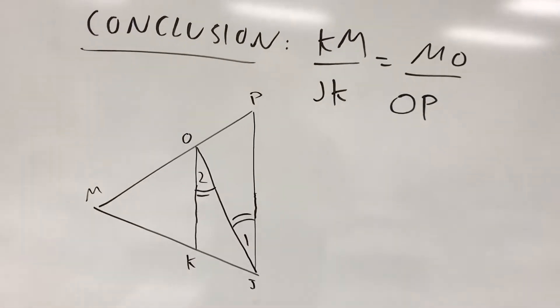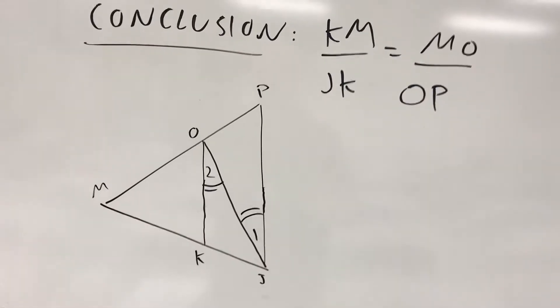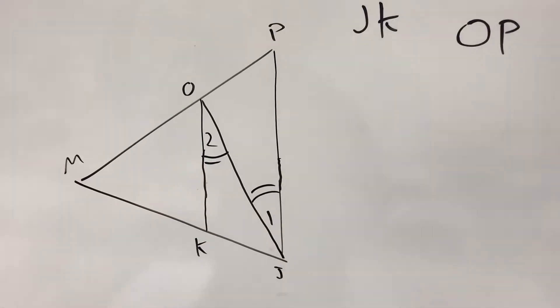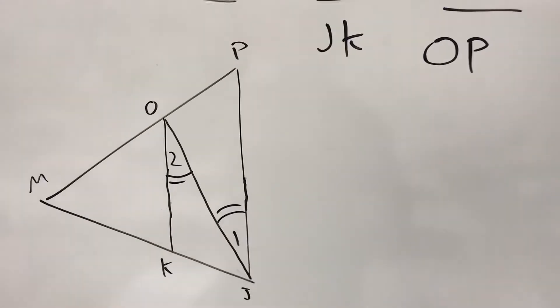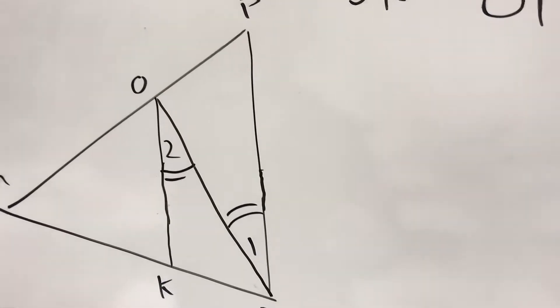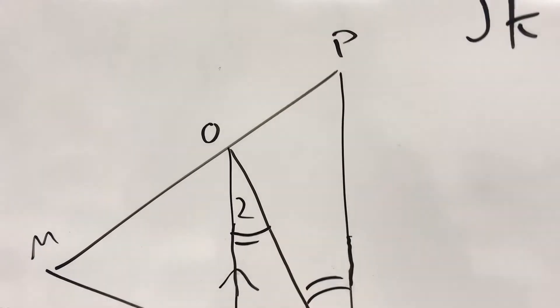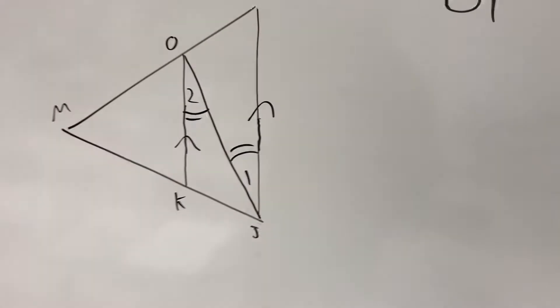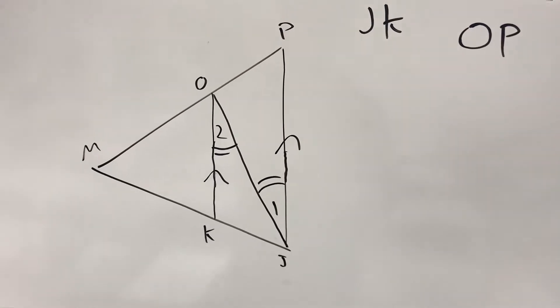Basically, the only thing we need to do there to show the side splitter is to show that we've got a pair of parallel sides. If you notice there, angle 1 and angle 2 are alternate interior angles. So basically, first step in your proof, you should be able to prove that those two lines are parallel because congruent alternate interior angles imply parallel lines.